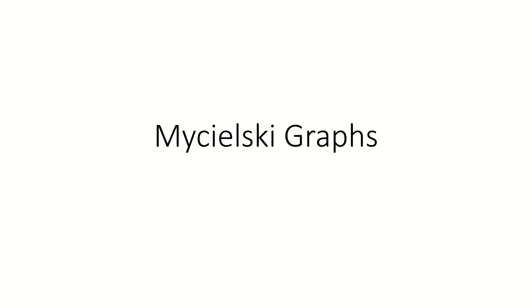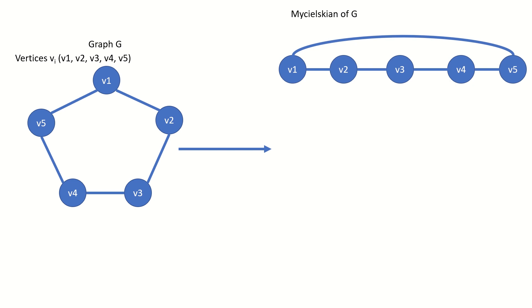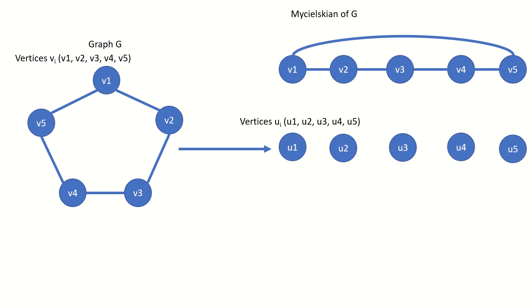Today we're going to talk about a graph operation called the Mycielskian of a graph and why it's so interesting. The Mycielsky graph of an undirected simple graph G with vertices vi is itself an undirected simple graph that contains graph G as a subgraph, along with the vertex ui for each corresponding vertex vi in graph G, and one additional vertex w.